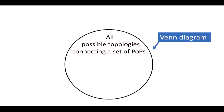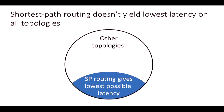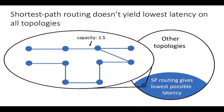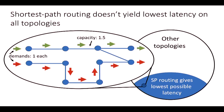Here we have the set of all possible topologies connecting a set of POPs. In the shaded area are topologies where shortest path routing gives the lowest possible latency among all routing algorithms. Those topologies look like trees. Here is a simple example where link capacities are each 1.5 units, and we have two aggregates carrying one unit of demand each. Shortest path routing routes everything on the shortest path, and notice you can't achieve any lower latency on a tree-like network.